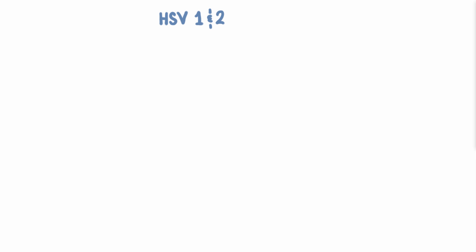We've learned how herpes causes mucocutaneous lesions, but now let's talk about the clinical side of this story. HSV1 and HSV2 first infect you through the skin or the mucous membranes. It turns out transmission is almost always directly from person to person and not from fomites. That means it can be transmitted from skin to skin, genital to genital, oral to genital, oral to oral — basically direct contact.